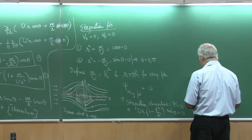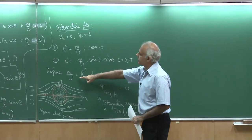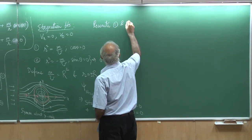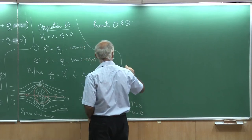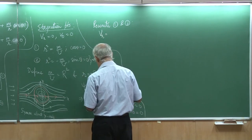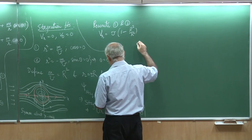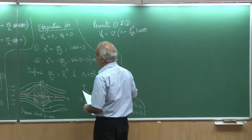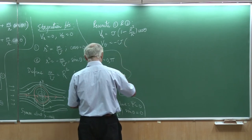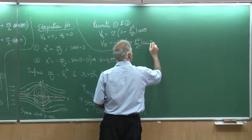Let us look at how v_r and v_theta are defined in general. Having used the relation that capital R squared equals m over u, I can rewrite the velocity expressions as: v_r equals u times (1 minus R squared over r squared) times cosine theta, and v_theta equals minus u times (1 plus R squared over r squared) times sine theta.